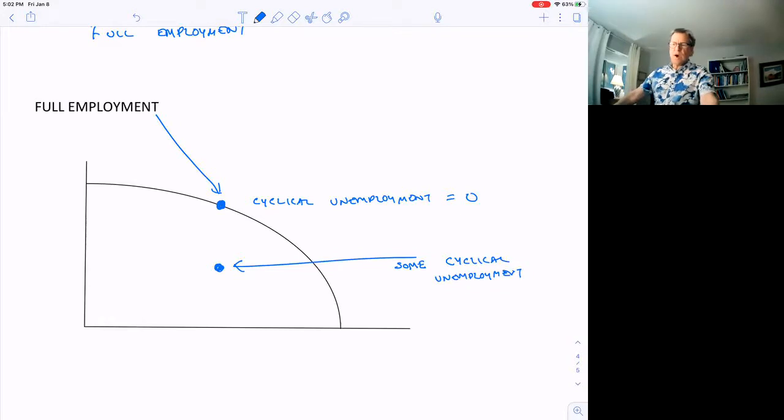So the question is, well, what is full employment? What is normal unemployment? When we're out there on the PPF, what should it be? It's not clear. But you can look at the data just as well as anyone else and decide for yourself what it should be.